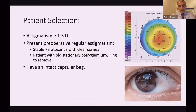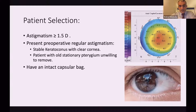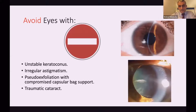Patient selection should be careful. With TORIC IOL, astigmatism should be more than 0.15 diopters and should be regular, stable astigmatism. If the patient has keratoconus, it should be stable keratoconus, confirmed by sufficient follow-up, or with a small pterygium with regular astigmatism and the patient is unwilling to remove it. Definitely the patient should have an intact capsular bag without any evidence of zonulysis. Avoid patients with unstable keratoconus, irregular astigmatism, pseudo-exfoliation, any cause of compromised capsular bag support, or traumatic cataract.